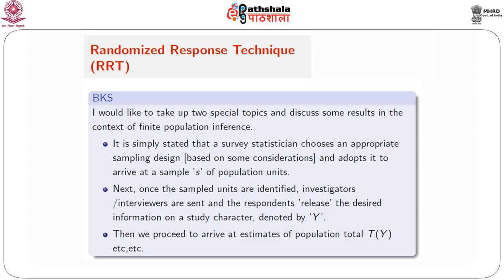This topic deals with a situation like this: a survey statistician chooses an appropriate sampling design based on some considerations and adopts it to arrive at a sample of population units. Once the sampled units have been identified, investigators or interviewers are sent and the respondents release the desired information in respect of a study character denoted by capital Y. We denote the typical sample by s, typical units in the sample by i, and therefore data gathered is Y_i for i in s.